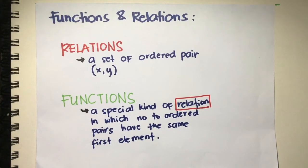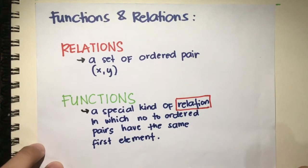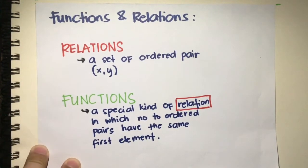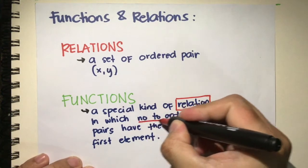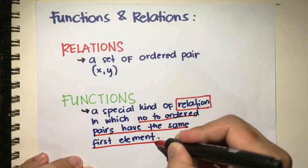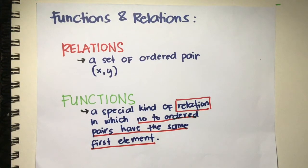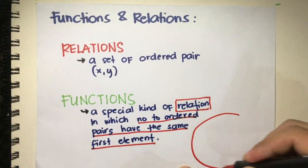Let's begin by defining our terms: functions and relations. A relation is a set of ordered pairs, with a value for x and a value for y. Functions are special kinds of relations in which no two ordered pairs have the same first element. Take note that no two ordered pairs can have the same first element.